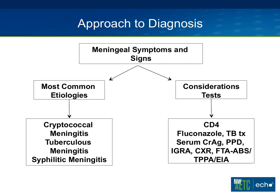This flow diagram approaches diagnosis in a patient with meningeal symptoms and signs in the setting of HIV. The most common etiologies in our region are cryptococcal meningitis, TB meningitis, and syphilitic meningitis. Key considerations include: Is CD4 below 200 or 100, pointing toward crypto? Is the patient on fluconazole, making crypto less likely? Are they on TB therapy? Serum cryptococcal antigen, PPD or IGRA, chest X-ray, and treponemal tests all factor in.